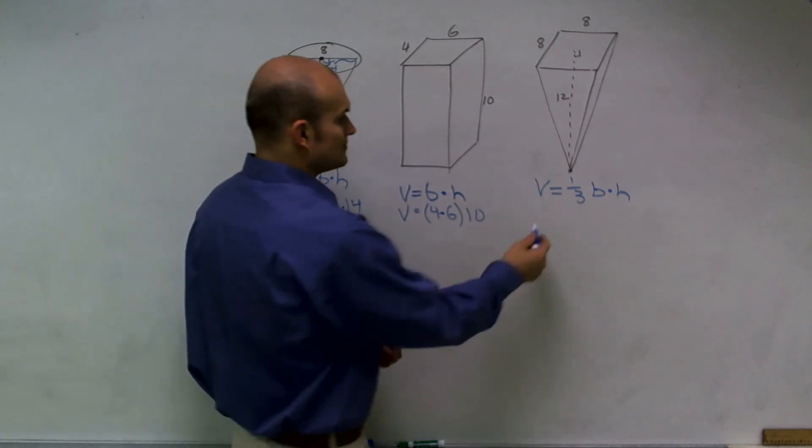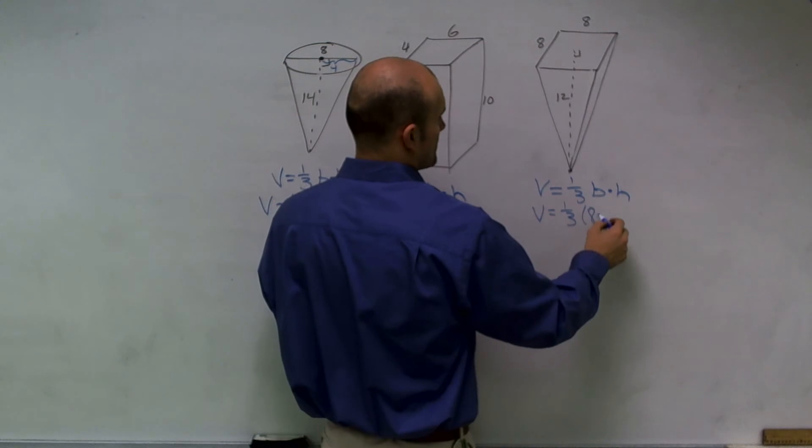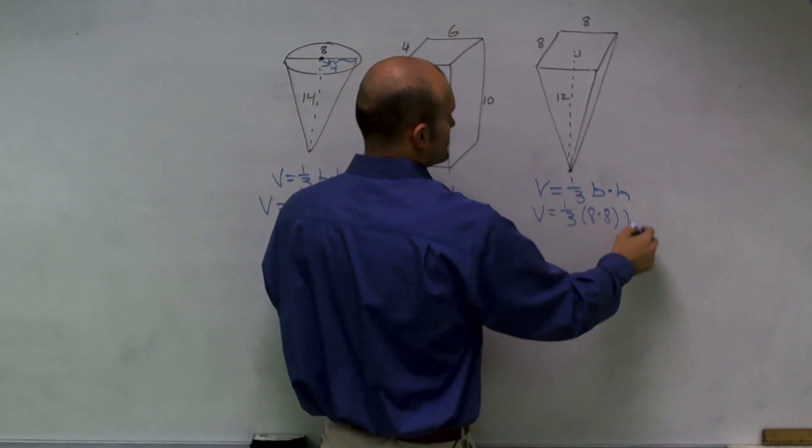And then for this problem, volume equals one-third area of base is eight times eight times our height, which is twelve.